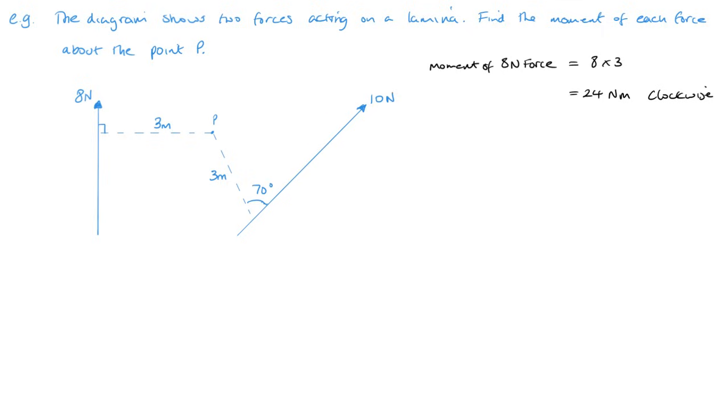Next we want to find the moment of the 10 Newton force. Now for that we need to find this distance here, which I'll call x. But that distance is 3 sine 70. So we've got 10 Newtons times by 3 sine 70, and that is 28.2 Newton meters. And this one in this case will be going this direction, which will be anti-clockwise.